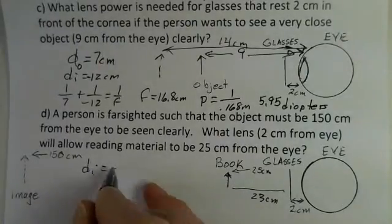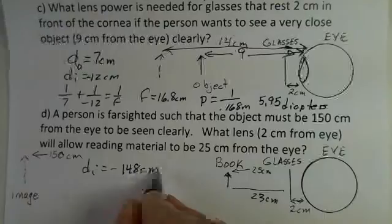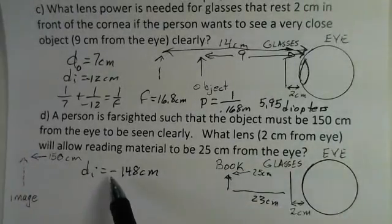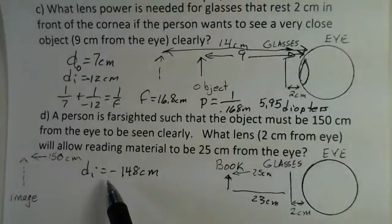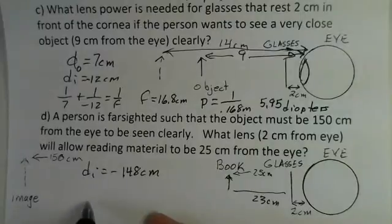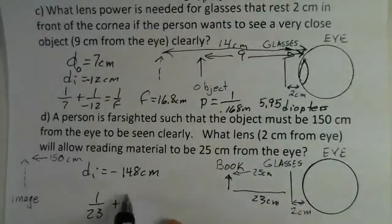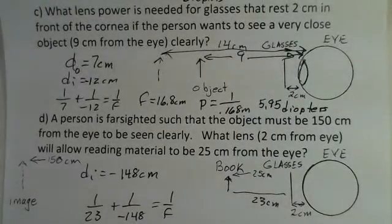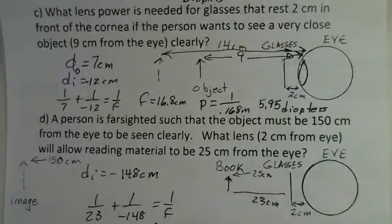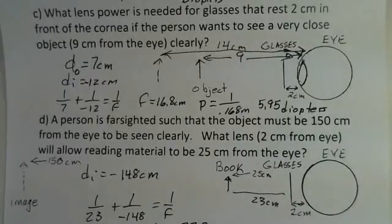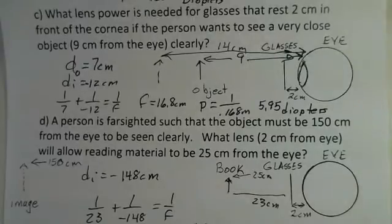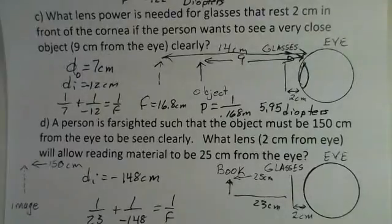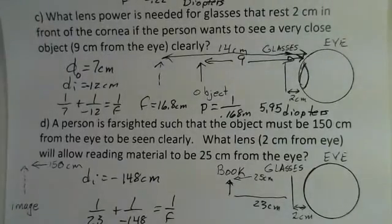150 centimeters from the eye. The image distance is going to be minus 148 centimeters. 150 minus the 2 centimeter distance here. Negative because the image is on the left of the lens. By convention, that's a negative number. So 1 over the object distance plus 1 over the image distance equals 1 over the focal length. Again, you should pause and work this out. I came up with a focal length of 27.2 centimeters. Power is 1 over focal length in meters. So 1 over 0.272. And I came up with 3.7 diopters.